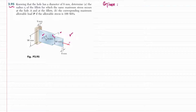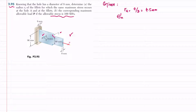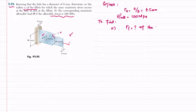Given: the diameter of hole A is 9mm, so the radius of hole A equals 9 divided by 2, which is 4.5 millimeters. The allowable stress sigma is given as 100 megapascal. We need to find: first, the radius rf of the fillet, and second, the corresponding maximum load P.